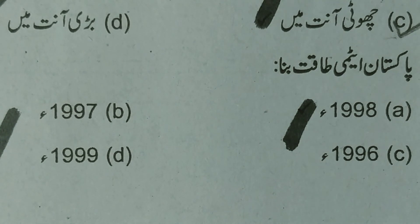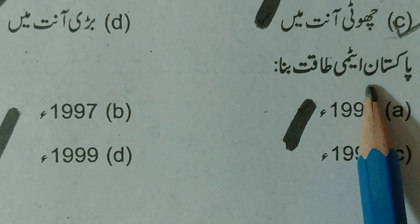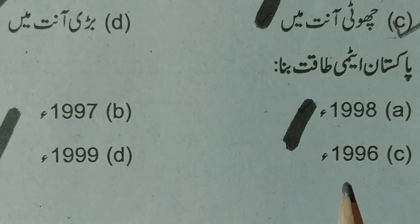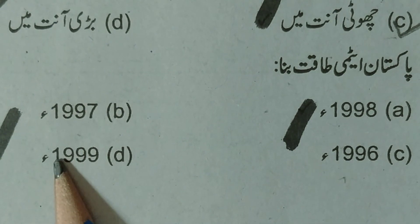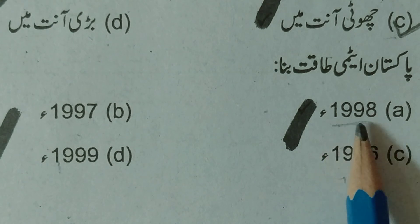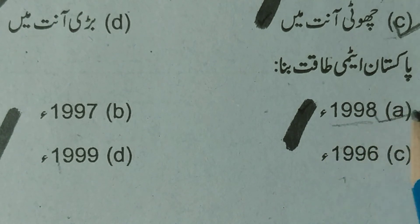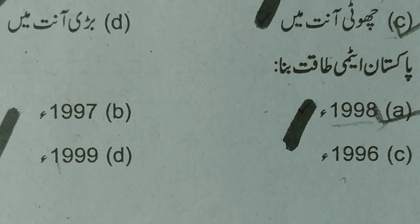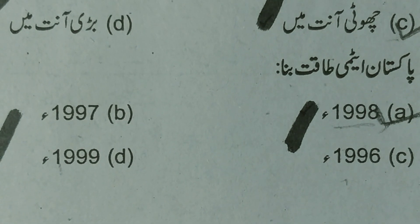MCQ 15: Pakistan's atomic blast — options are 1998, 1996, 1999. Pakistan's atomic blast took place in 1998. Dr. Abdul Qadeer Khan's team conducted the atomic blast, so Pakistan became a nuclear power in 1998. These were our MCQs from the 2016 Group B paper.